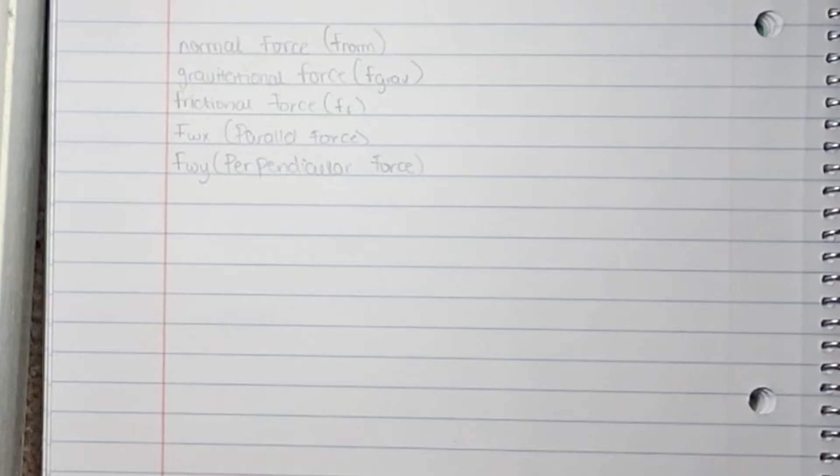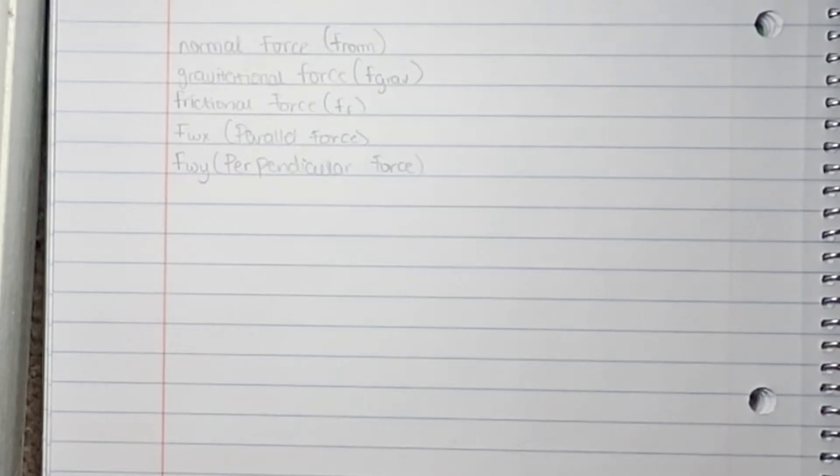We have talked about the normal force before in the previous unit. Basically, the normal force is the weight of the object opposing the gravitational force — so it is pulling upwards, opposite to the gravitational force which is pulling downwards, in the opposite direction of the normal force.